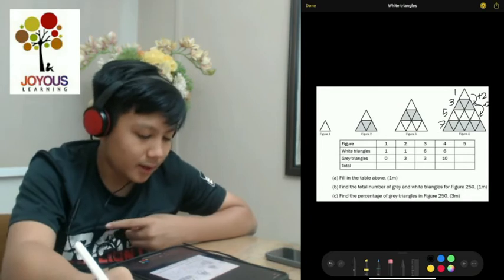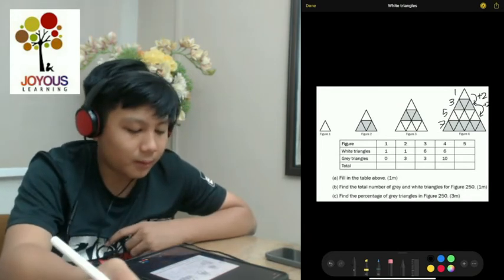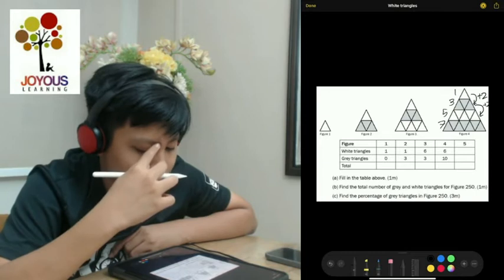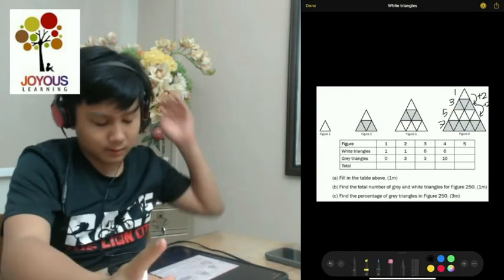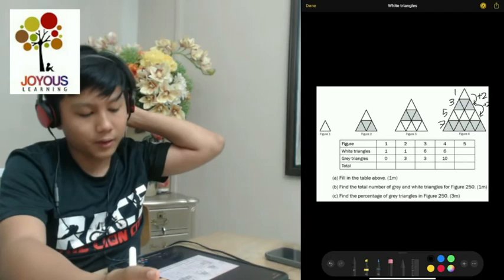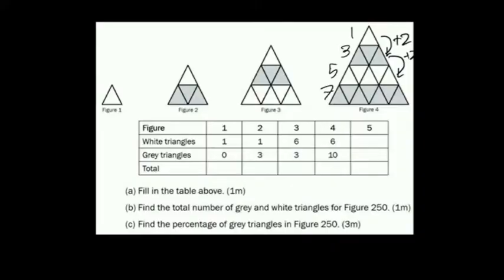So let's see the first question. A, fill in the table above. So the first thing we need to find out is the number of white triangles in figure five. Since it adds two in every layer and the figure number is the number of layers there are, figure one has one layer, figure two has two layers and so on.